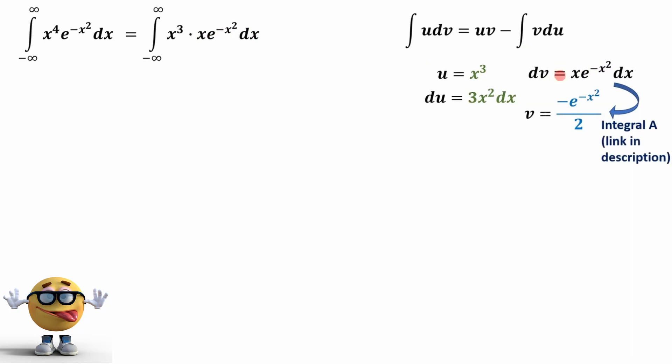Now the integral of this, I already did in a video in like two and a half minutes. You can check that out, the link's in the description. The integral of this, v is equal to negative e to the negative x squared over 2. If you take the derivative of this, you will get this function. This is the integral right here.